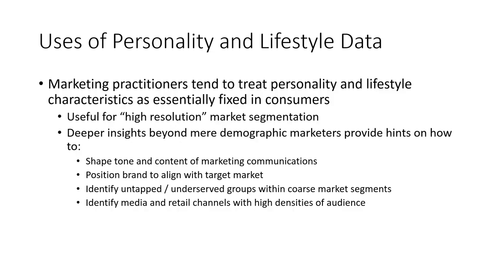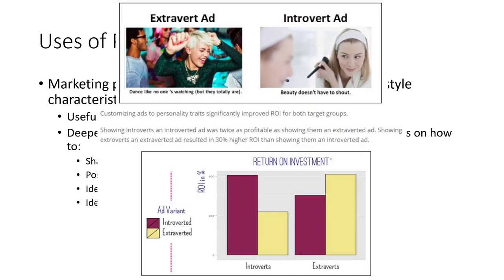By way of this example, we've illustrated some of the key uses of personality and lifestyle data. Marketing practitioners tend to treat personality and lifestyle characteristics as essentially fixed — of course people's lifestyles and personalities can evolve over time, but in the small snapshot of time that a marketer might utilize this information, we treat these as inherent traits of the individual. This type of information is very useful for high-resolution market segmentation, as illustrated through the video game example. By knowing the traits of someone's personality and their lifestyle, this provides much more useful and deeper insights beyond mere demographics — allowing marketers to better understand how to shape the tone and content of their marketing communications, and how to position a brand to align with a target market. For example, individuals who are extremely extroverted — we may expect a brand trying to reach that same audience to position itself to also be perceived as outgoing and extroverted.